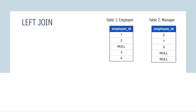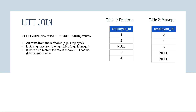Now let's understand the left join, also known as left outer join. The left join returns all the rows from the left table and returns matching rows from the right table — in this case the manager table. If there is no match, the result shows NULL for the right table's columns.